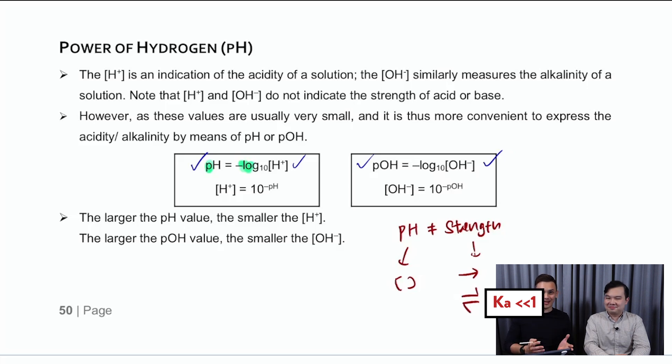Whereas strength is always about whether you're going to be fully dissociated or partially dissociated. If you're fully dissociated, you're a strong acid. Partially dissociated, you're a weak acid. And a weak acid will have the concept of Ka.